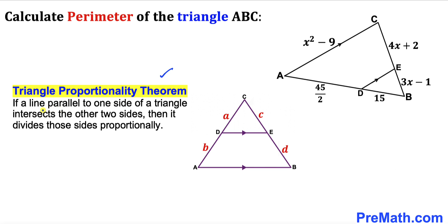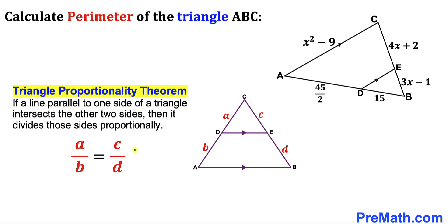Let's recall the triangle proportionality theorem. According to this theorem, if a line parallel to one side of a triangle intersects the other two sides, then it divides those sides proportionally. If the segments are represented by a, b, c, and d, then we can write the proportion as a divided by b equals c divided by d.